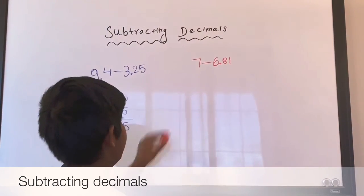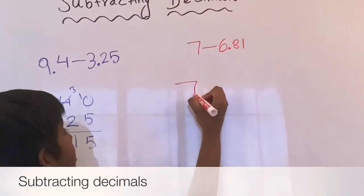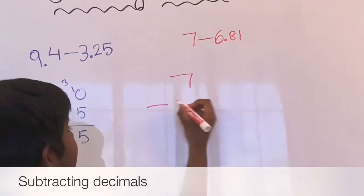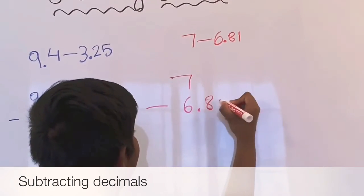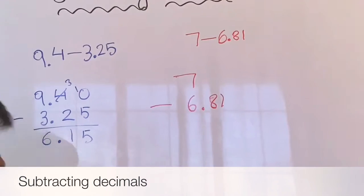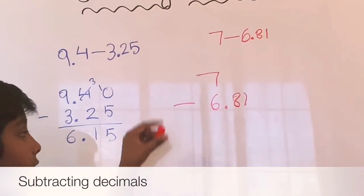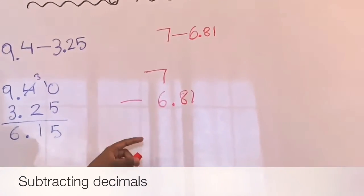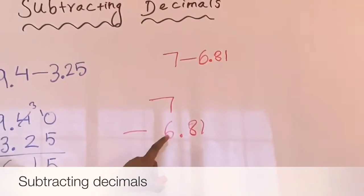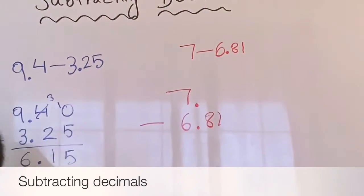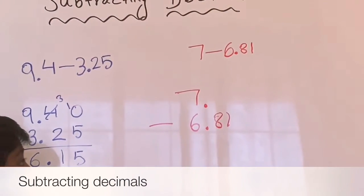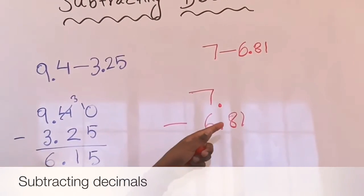We have to do the same thing, we have to align it together. So 7 minus 6.81. See there's no decimal, so we can just copy that decimal and put it right beside the seven, so that's going to be a little bit easier. If there's no number we can put a zero.